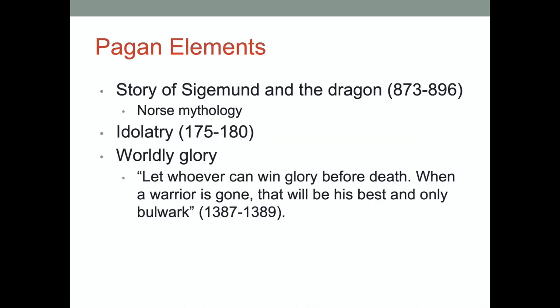Among all these Christian elements, we still see some pagan elements. For instance, we get the story of Sigmund and the dragon, which is part of Norse mythology. We also get idolatry at lines 175 to 180, with a mention of pagan shrines and idols of gods. And lastly, there seems to be a sustained focus on worldly glory, which should map onto our previous understanding of kleos in the Greek epic myths.